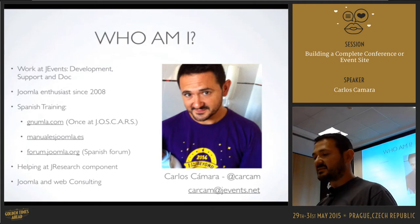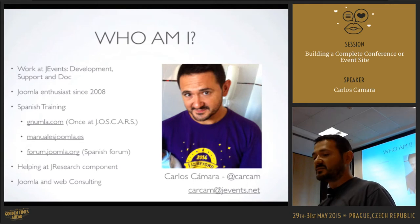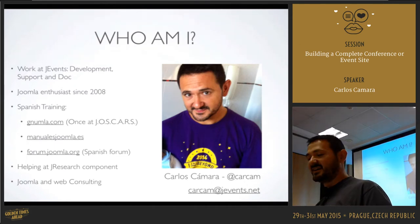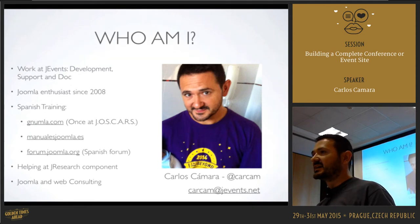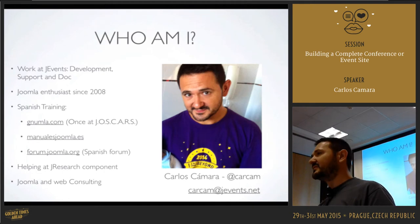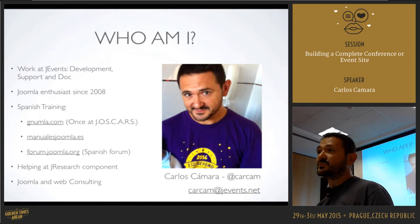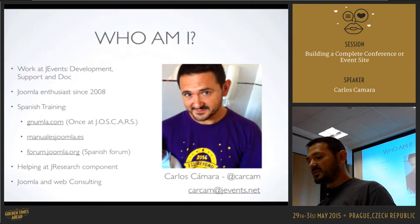I'm from Spain, as you can tell from my English. I built a blog with Isidro Vaquero called newla.com, which was once nominated for Oscars — we didn't win, but it's nice. That blog is almost dead, so we started a different project called Manuales Joomla, a free ebook for Spanish users. I'm also moderator of the Spanish section of the official Joomla forum.